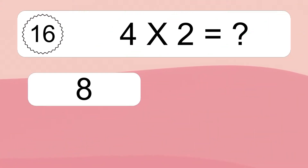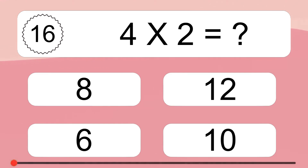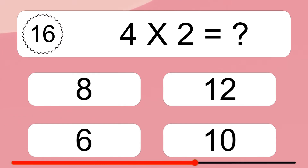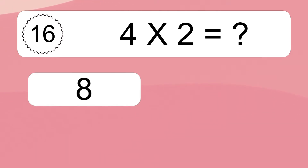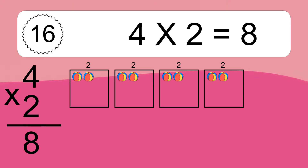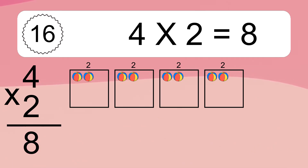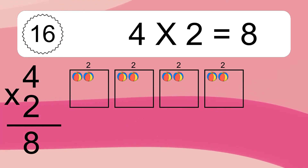Four times two equals what? Four times two equals 8. We have four boxes, and each box has two colorful balls inside. If you count all the balls in all the boxes together, you will have four times two balls. This equals 8 balls.